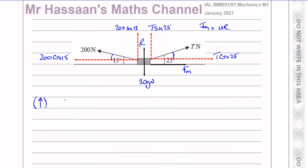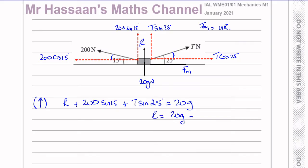So R is not just 20g. Resolving vertically: R + 200 sin15 + T sin25 = 20g, therefore R = 20g − 200 sin15 − T sin25.